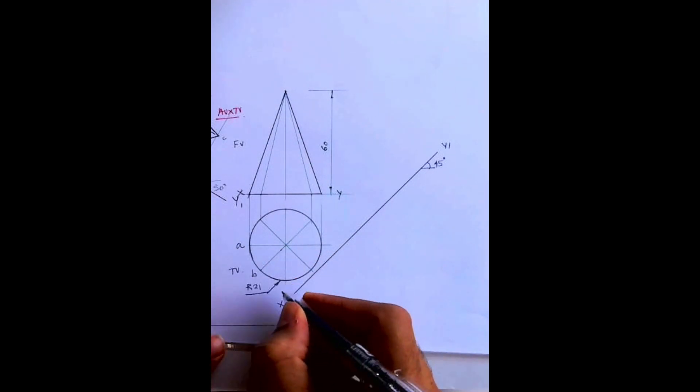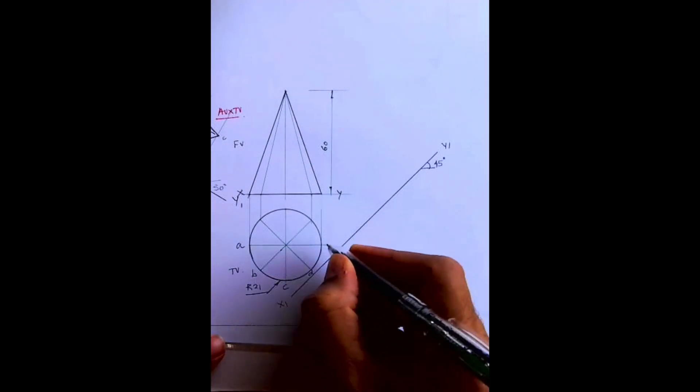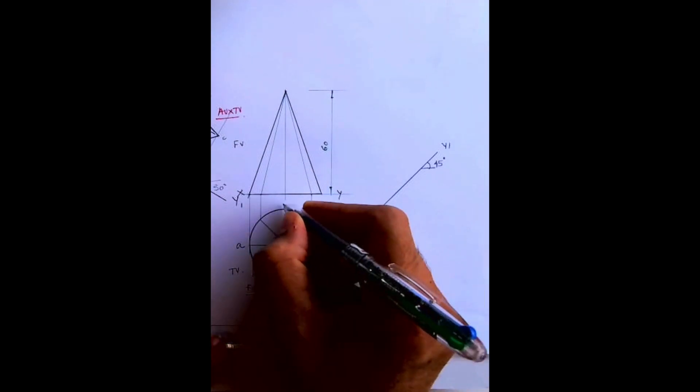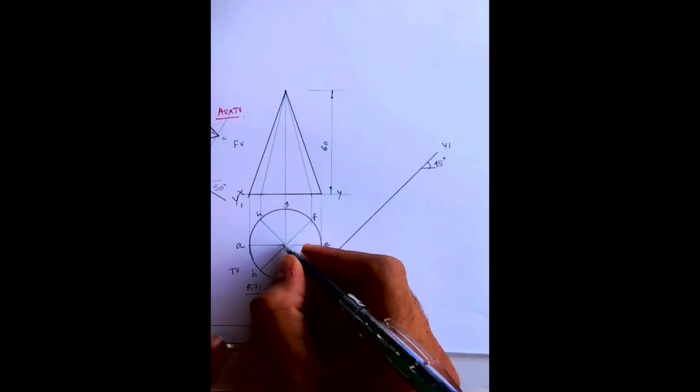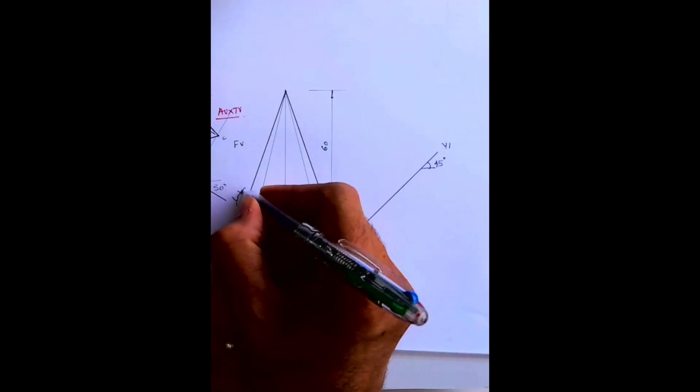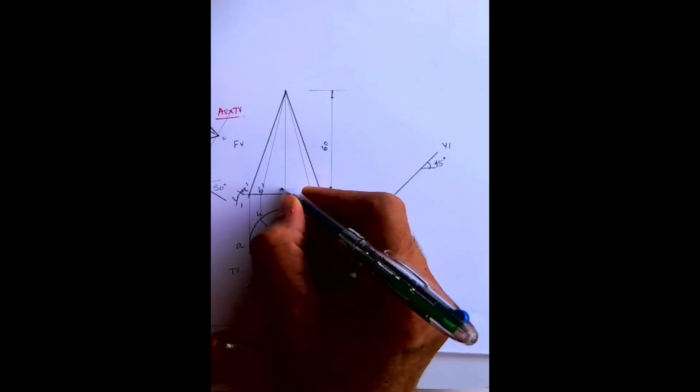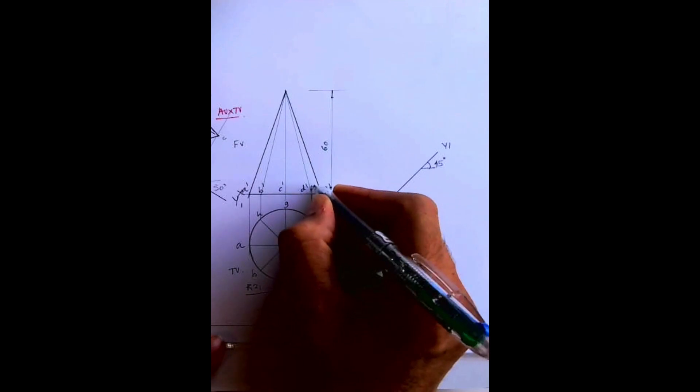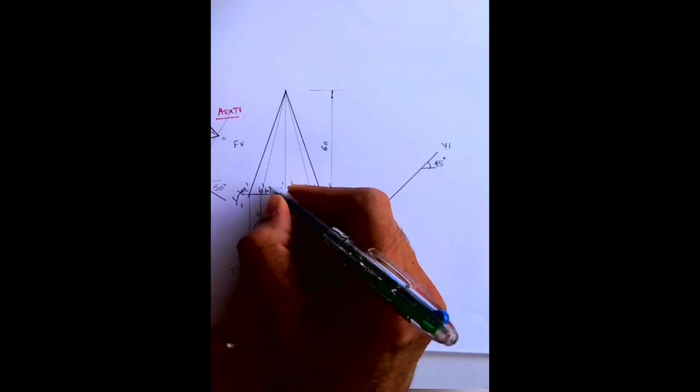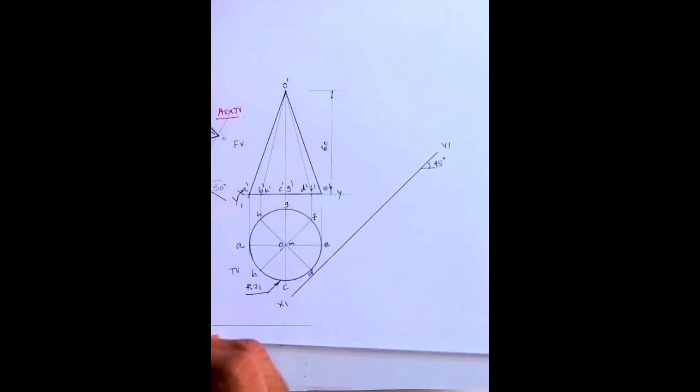This is a, b, c, d, e, f, g, h, o. M is the axis. This is a dash, b dash, c dash, d dash, e dash, f dash, g dash, h dash, o dash, and m dash.